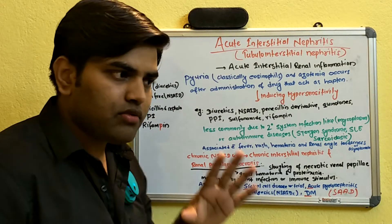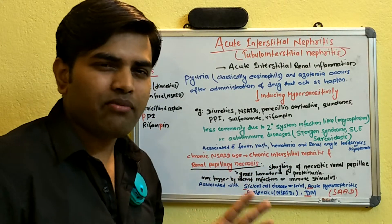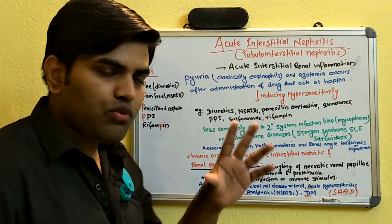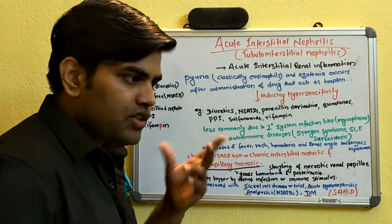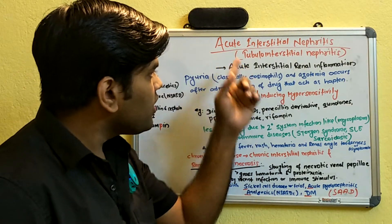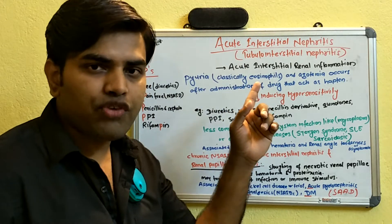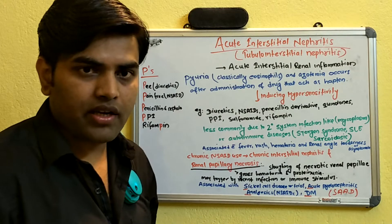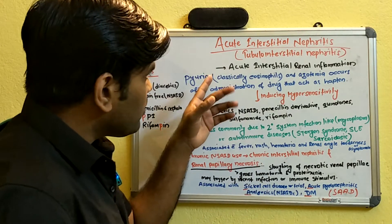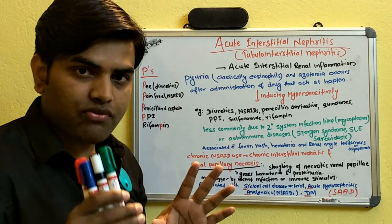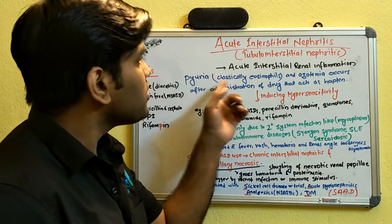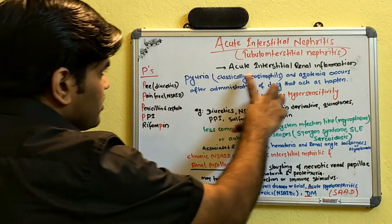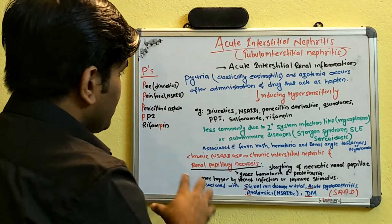A classic historical example: methicillin was initially used to treat MRSA — methicillin-resistant Staphylococcus aureus. After its use, it was found to cause eosinophiluria and acute interstitial nephritis. Because of this side effect, methicillin was removed from the market. This is a well-known example of drug-induced acute interstitial nephritis.